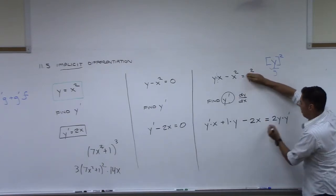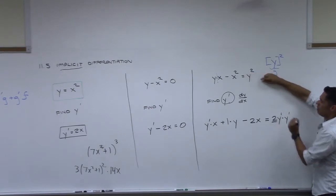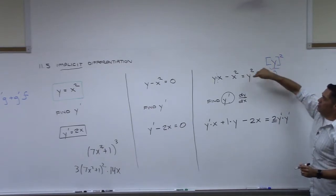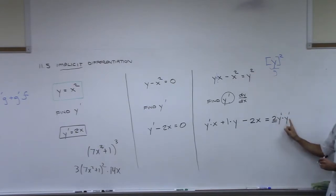We look at that y as being something to a power. So the first thing we do is we drop the two out front. We rewrite the y to the first power. But then we need to go take derivative of what's in here. What's the derivative of y? Y prime, not one. If it was x, it would be one.